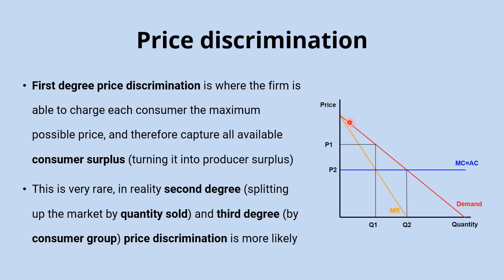Third degree price discrimination is probably the most common, and it involves separating the market by consumer group — for example, student discounts at the cinema or lower train fares for over-65s. These groups are less likely to be earning, so they generally have a lower willingness to pay, and you can charge them less. On the diagram, the standard price P1 applies to adult or standard tickets sold up to quantity Q1, while the lower price P2 targets additional market groups who might otherwise be priced out. You still gain revenue from selling to them at the lower price, while retaining the benefits of the higher price for the rest of the market.